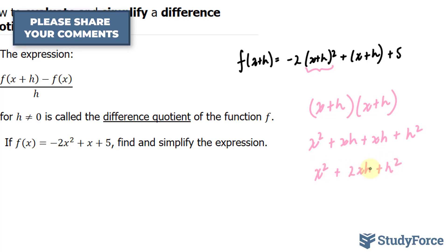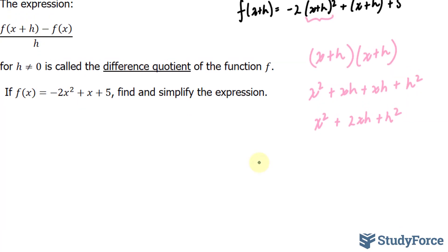We're going to multiply each of these terms by negative 2, equals negative 2x squared minus 4xh. Notice that I multiplied negative 2 with a 2, and negative 2 times h squared is negative 2h squared.